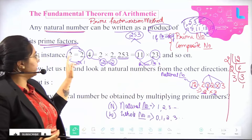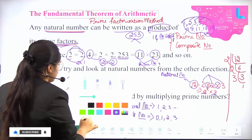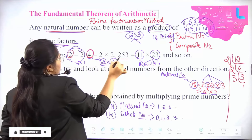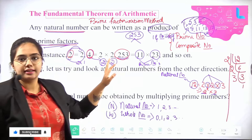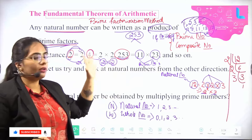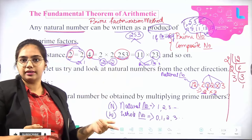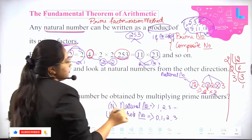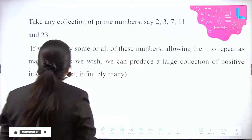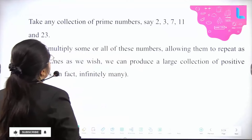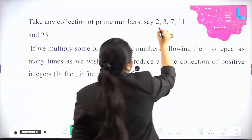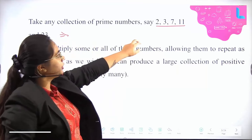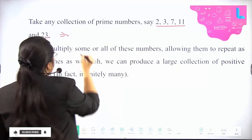These are just examples — the numbers used are 2, 4, and 253. In this whole lecture, we will be solving the theory and then some examples. Now let us try some examples. In the textbook they have given 2, 3, 7, 11, and 23 as prime numbers.